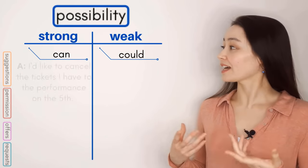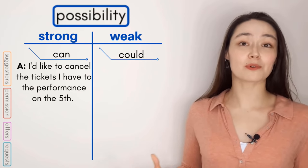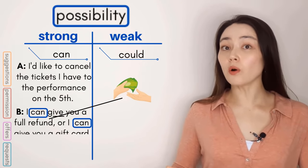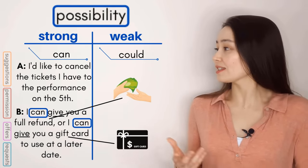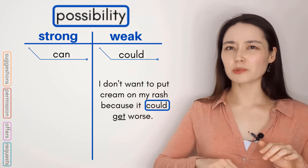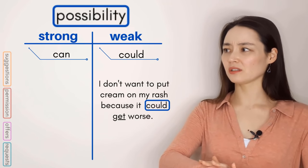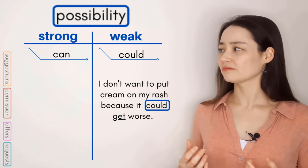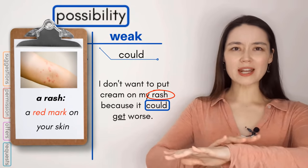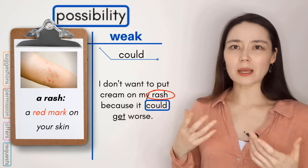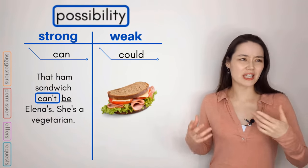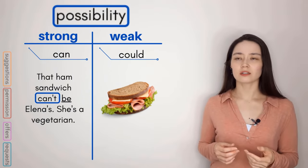You're on the phone: 'I'd like to cancel the tickets I have to the performance on the 5th.' 'Okay, I can give you a full refund or I can give you a gift card to use at a later date' — two possibilities. 'I don't want to put any cream on my rash because it could get worse' — I'm not a doctor, this is a maybe. A rash is a red mark on your skin from some type of irritation. 'That ham sandwich can't be Elena's — she's a vegetarian.' Impossible.